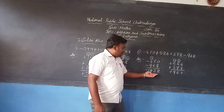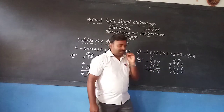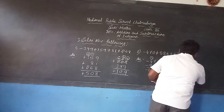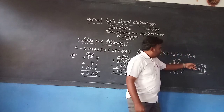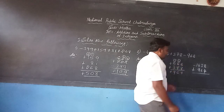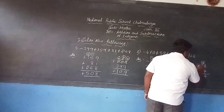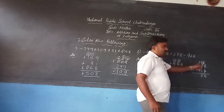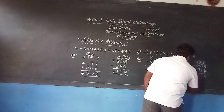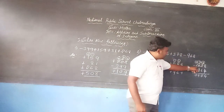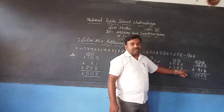Now we have minus 1438 and plus 964. These two sums have different signs, so we find the difference. 8 minus 4 is 4. 3 is smaller, so borrow from 4 — 3 becomes 13 and 4 becomes 3. 13 minus 6 is 7. 3 is smaller again, so borrow from 1 — 3 becomes 13 and 1 becomes 0. 13 minus 9 is 4. After finding the difference, attach the greater number's sign. The greater number is 1438, which has the minus sign, so attach minus. The final answer is minus 474.